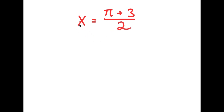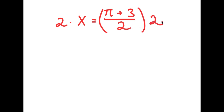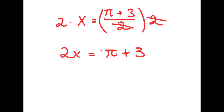All I'm doing is giving a value to a variable, which is completely legal. So now what I'm going to do is multiply both sides by 2. So I get 2 times x is equal to pi plus 3 over 2, times 2. Now, 2 times x is equal to 2x, so I get 2x is equal to — these two twos cancel out — pi plus 3. So I get 2x is equal to pi plus 3.